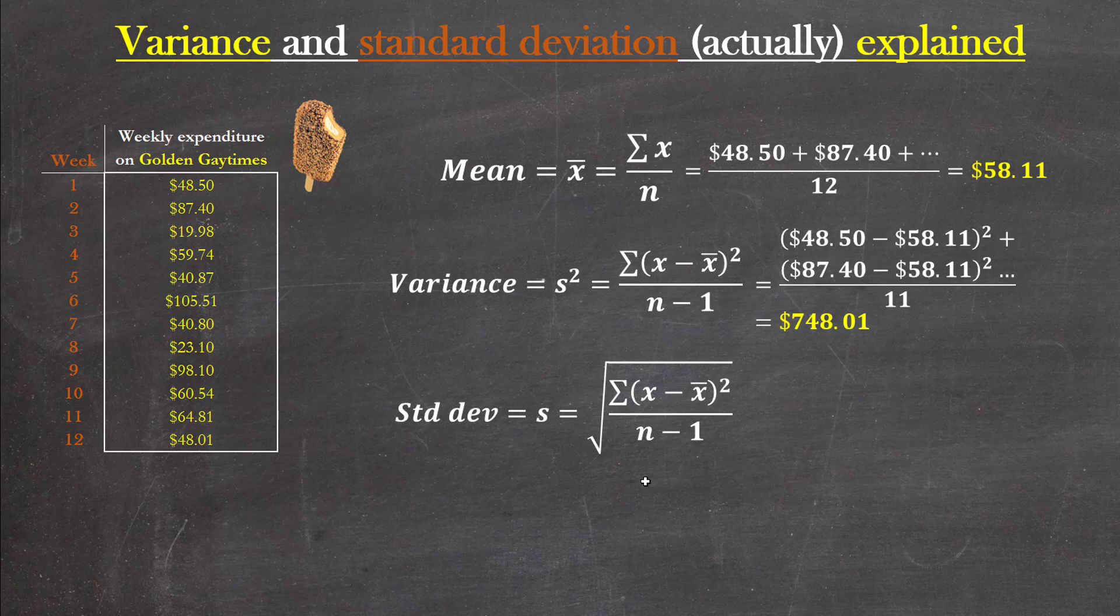The variance is often a very large number and doesn't really hold much intuitive value - it's hard to get a sense of whether that's big or small because everything's been squared. The standard deviation, however, square roots that and we get something that's maybe more intelligible and in line with the scale of the data set itself: a standard deviation of $27.35.